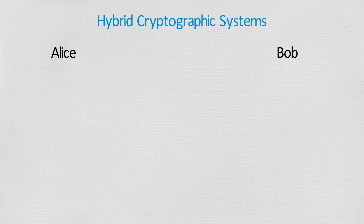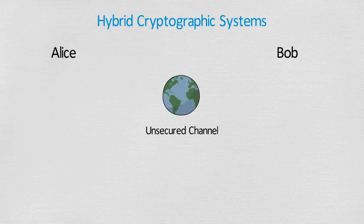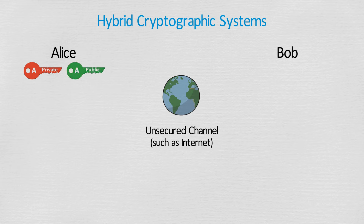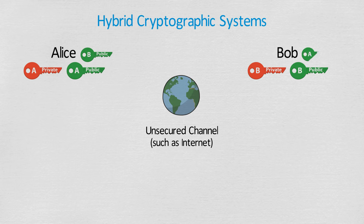In a hybrid system, Alice and Bob want to have secure communication over an unsecured channel. Both generate their own private-public key pair and exchange their public keys while keeping their private keys secret. This exchange of public keys is done only once.